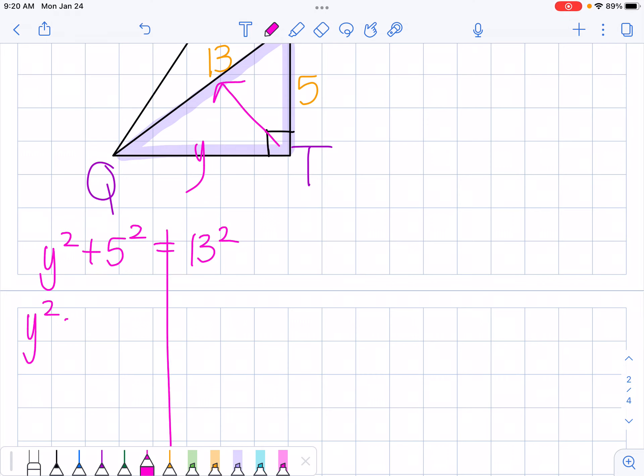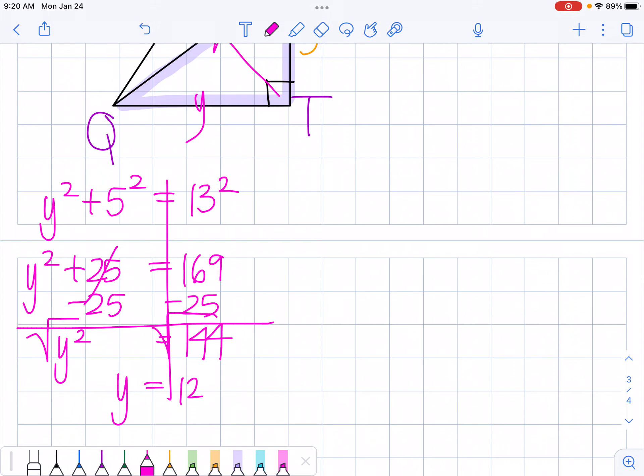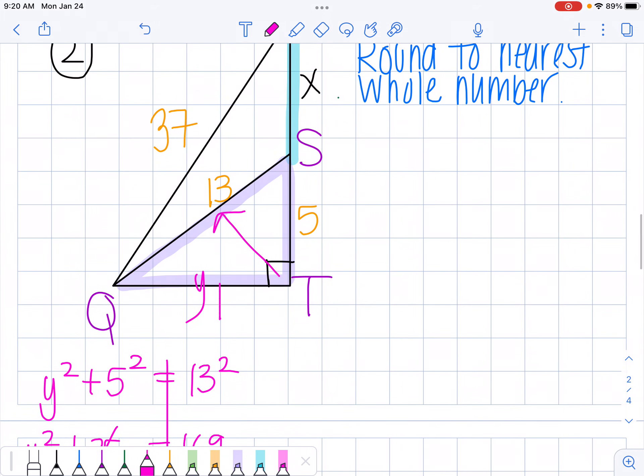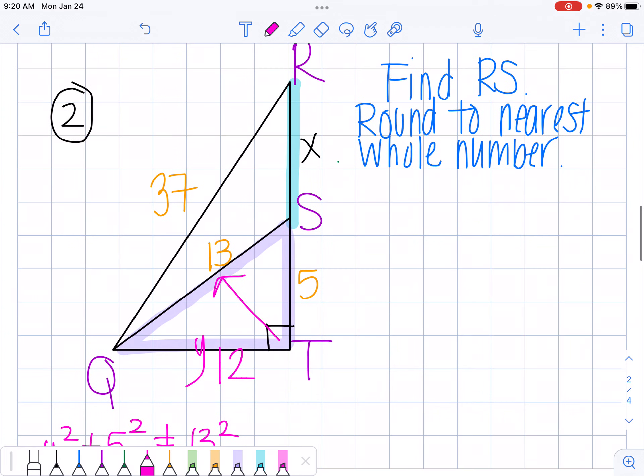I get y squared plus 25 is 169. I'm going to subtract 25 from both sides. 169 minus 25 is 144. And to cancel out my squared, I'm going to square root, so I get y equals 12. So this side is equal to 12.